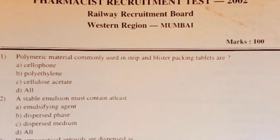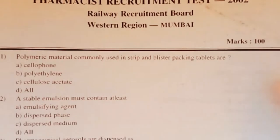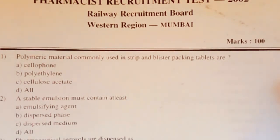Question 1: Which polymeric material is commonly used in strip and blister packing of tablets? Options are: A) cellophane, B) polyethylene, C) cellulose, D) others. The answer is A, cellophane. Cellophane is the polymeric material commonly used in strip and blister packing of tablets.